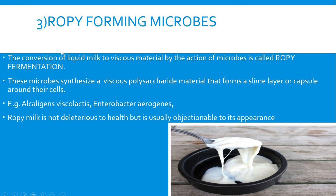The third type is ropy-forming microbes. Ropy fermentation is the conversion of a liquid to a viscous material by the action of microbes. Generally milk is a liquid, but under ropy fermentation it takes on a ropy nature. These microorganisms synthesize a viscous polysaccharide material that forms a slime layer or capsule around the bacterial cells. Examples include Alcaligenes viscolactis, Enterobacter aerogenes, Streptococcus cremoris, and some species of Micrococcus.